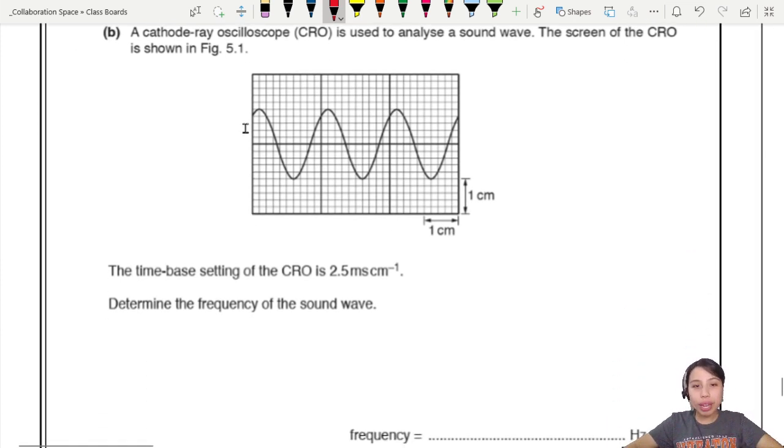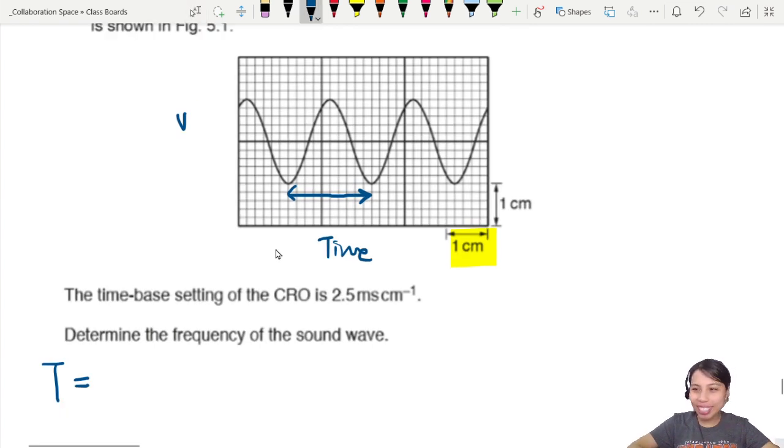So you have a CRO to analyze a sound wave. The screen shows this thing. Time-base setting is 2.5. What is the frequency? In CRO, usually the axis, the horizontal axis is time. The vertical axis is usually voltage, millivolts or something like that. So if you want to measure frequency, we can measure it from here to here. But wait, if we measure those things out, we are only measuring boxes and centimeters.